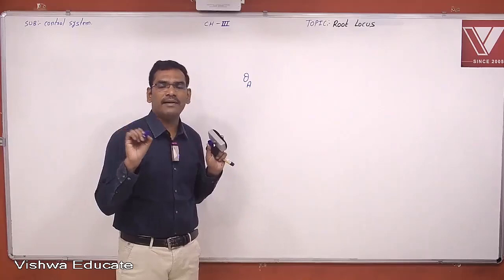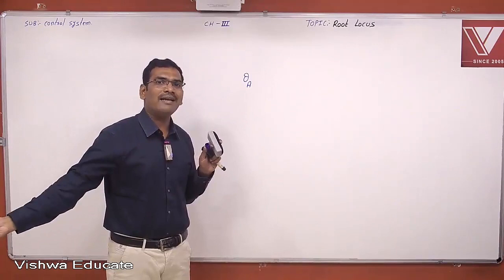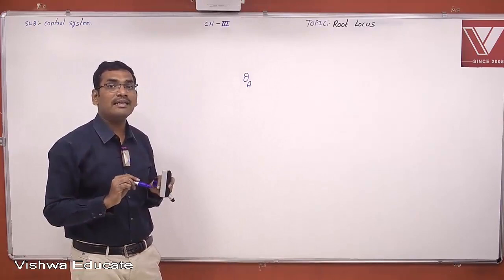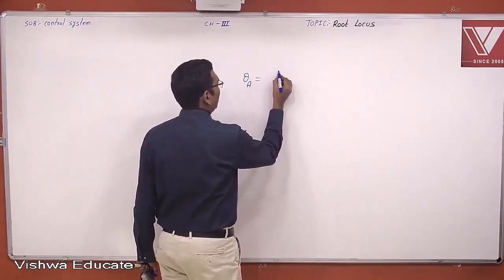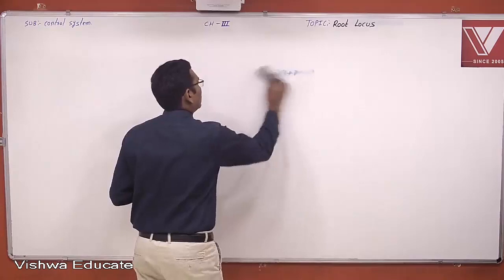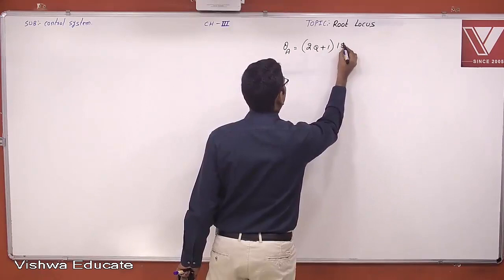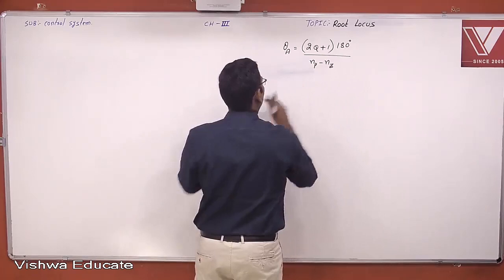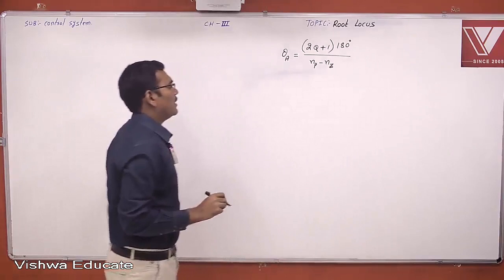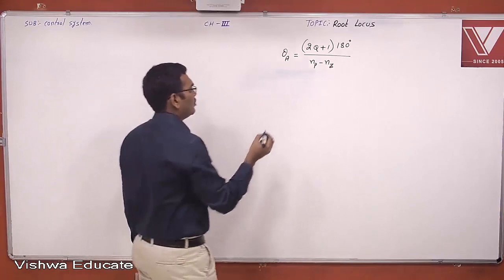If the angle of asymptote is 45 degrees, going in that direction you will meet a zero, because you start at a pole and go to meet the zero — that is a complete root locus branch. The angle of asymptote formula is: theta_a = (2q + 1) × 180° / (Np − Nz).